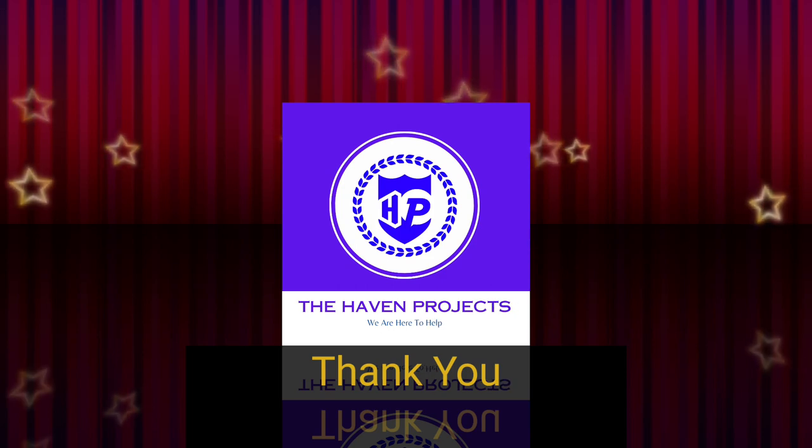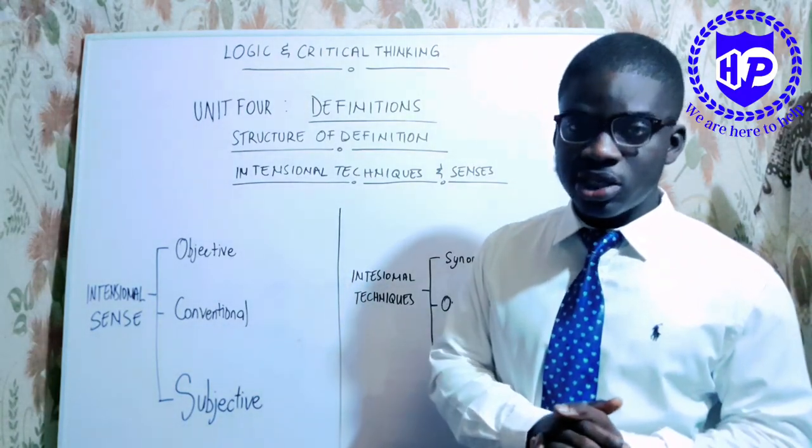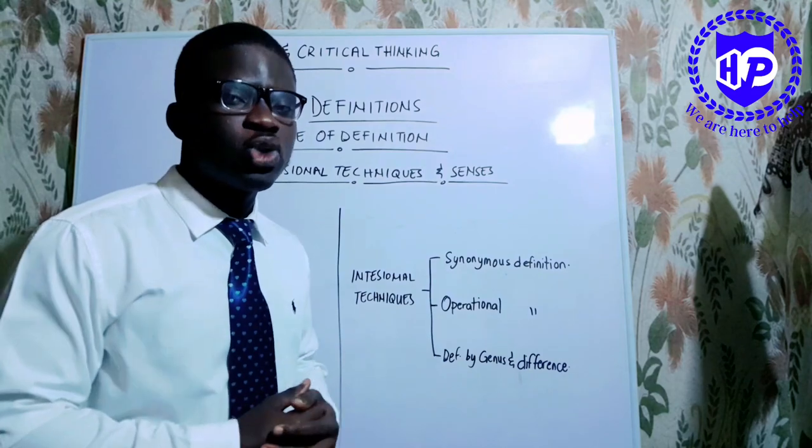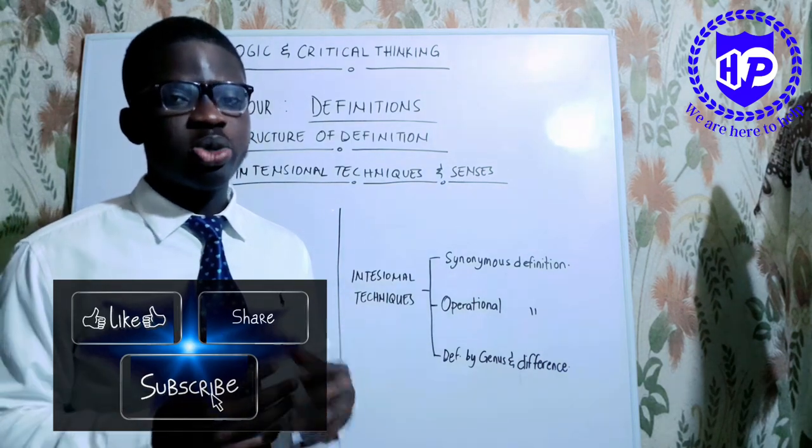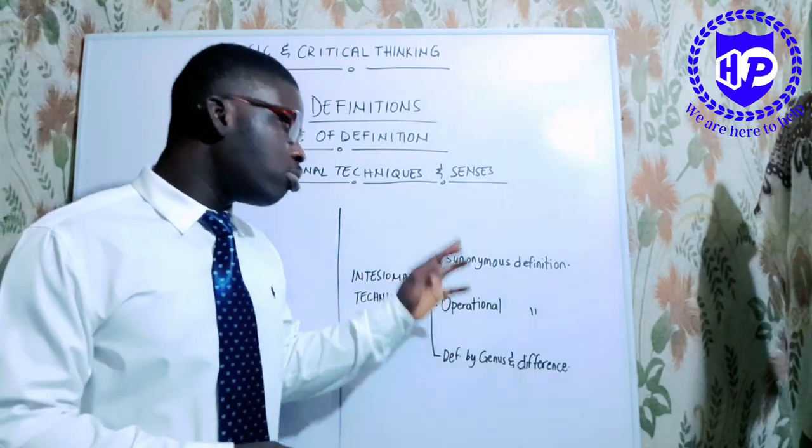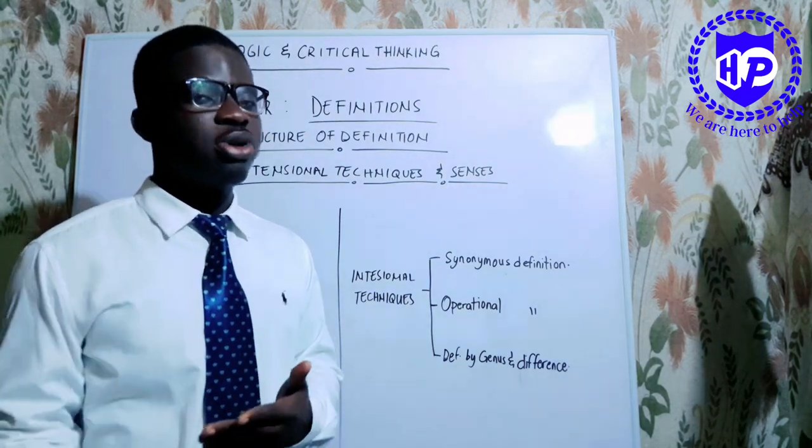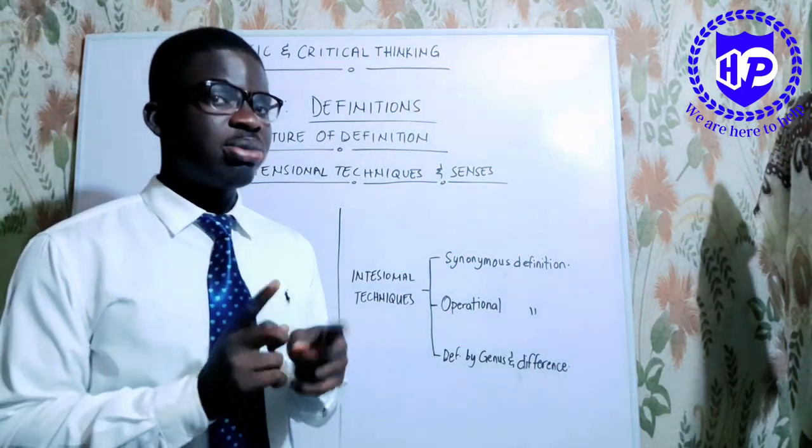Let's take a look at the intentional techniques. Now we are talking about the intension. The intension is referring to the set of attributes which the general term refers to. And this set of attributes must be possessed by all the objects that will fit into the extension. We look at synonymous definition. When you are working on your intension, you can also use synonyms. Maybe I want vehicles. You also say I want cars. But they are similar in meaning.